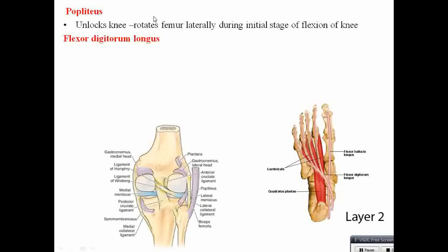Flexor digitorum longus causes flexion of the lateral four toes. Flexor digitorum longus can be seen inserted to the lateral four toes, dividing into four tendons — similar to flexor digitorum superficialis or flexor digitorum profundus of the hand.